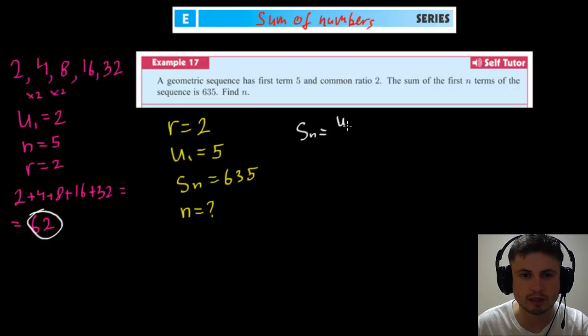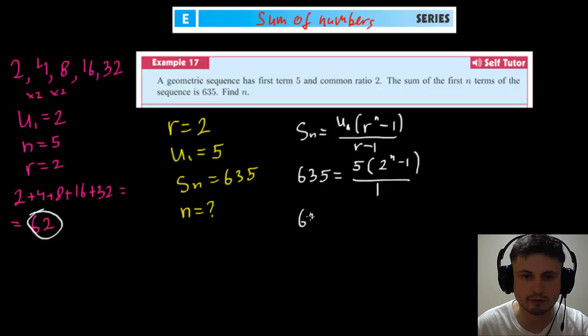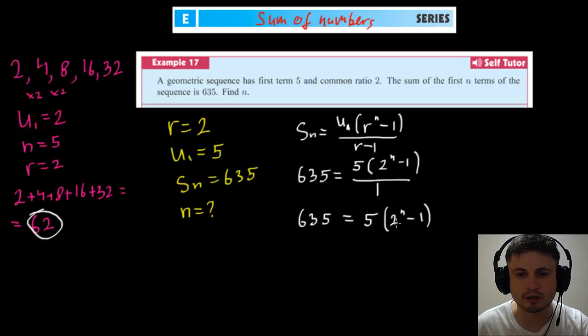So let's try to find this. So we know that sum or Sn, the series, equals to u1 multiplied by r to the power of n minus one and then divided by r minus one. And we know some of these already, so we can actually write this as 635 equals u1 is 5, 5 multiplied by 2 to the power of n minus 1 divided by 2 minus 1, which is 1. In other words, you can write this as 635 equals 5 multiplied by 2 to the power of n minus 1.